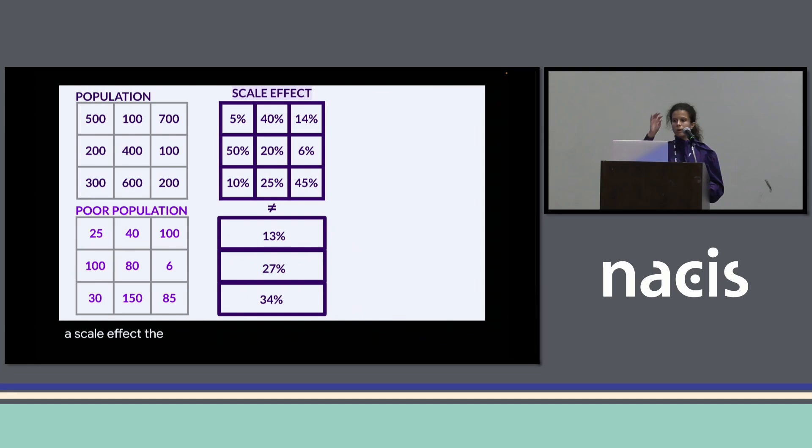Depending on how we count the data in the different districts, we get quite different results. For instance, if we cut our city in nine districts, we get results up to 50% poverty. Whereas if we cut our area of study in three different spaces, we don't go up to 50, but to 34 maximum.